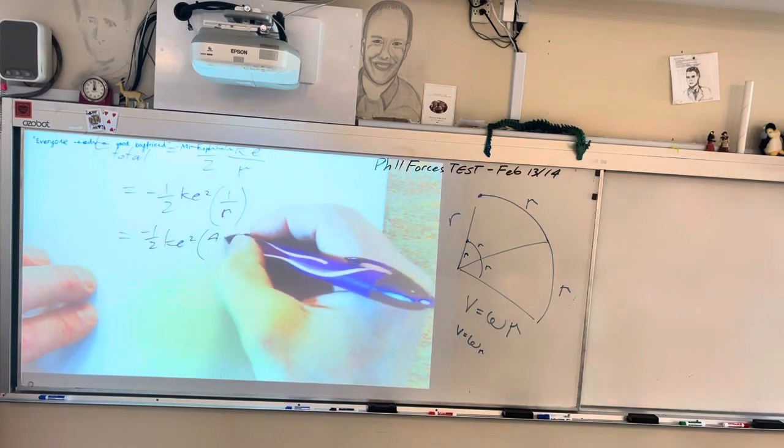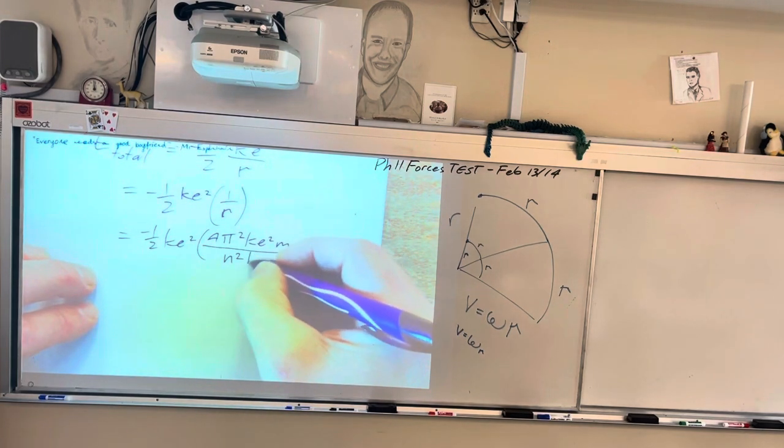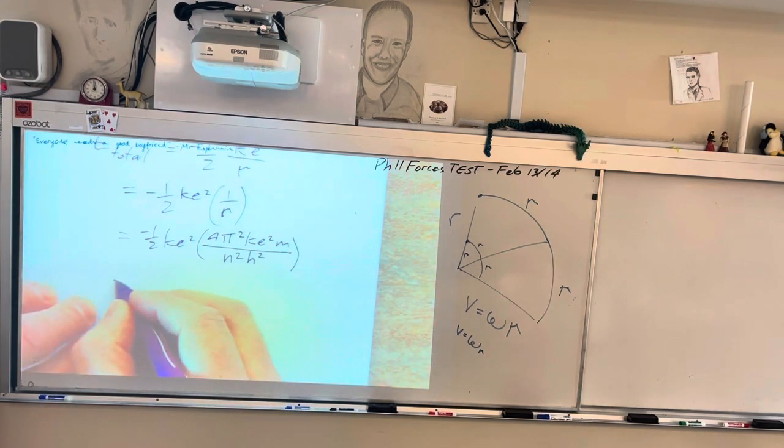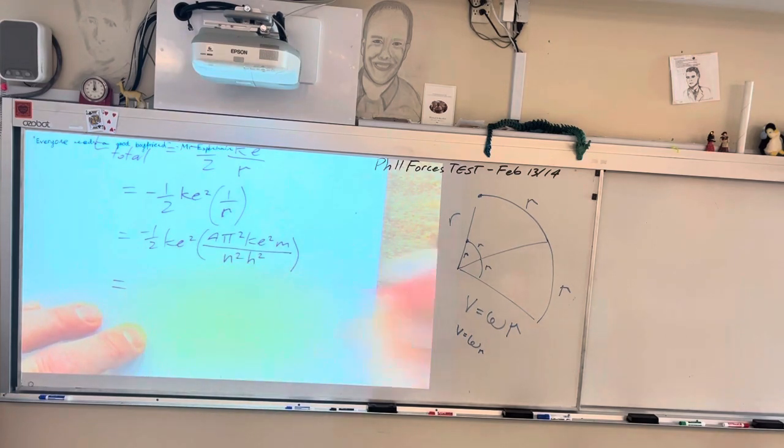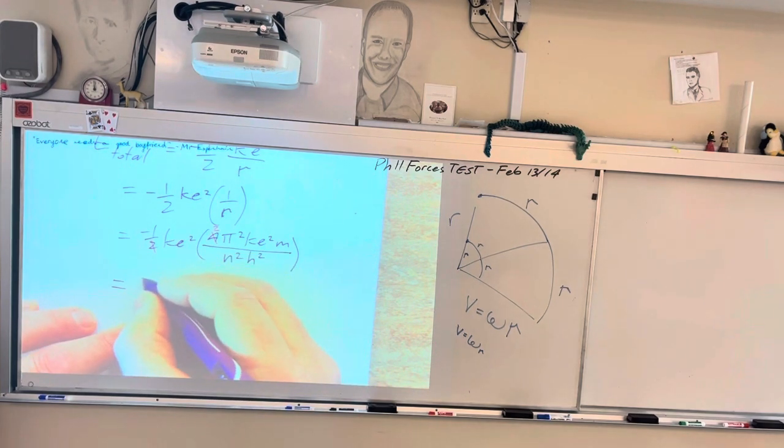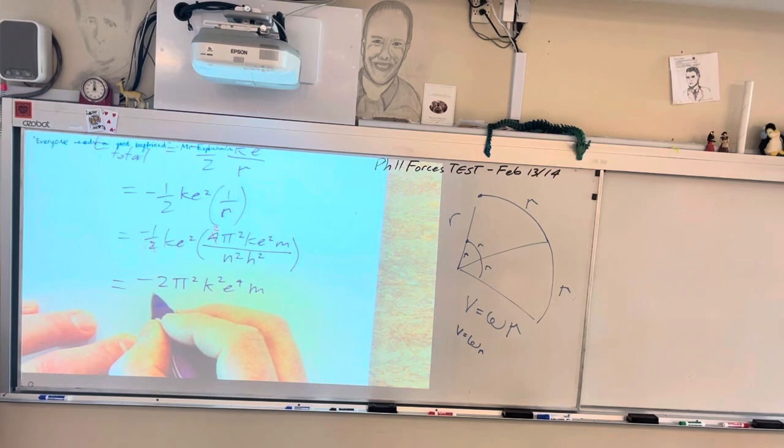So I'm just going to write it all in there. So 4 pi squared k e squared m over n squared h squared. And if you put that all together, you get, let's ditch the 2 on the bottom and we'll make the 4 into 2 on top. And you'll have negative 2 pi squared k squared e to the 4th m all over n squared h squared. Did I get everything? Yeah. I think so.